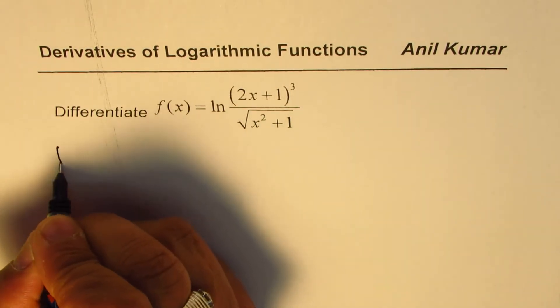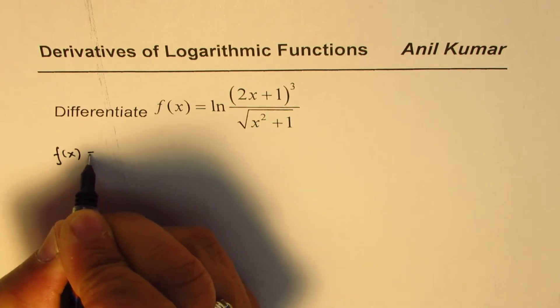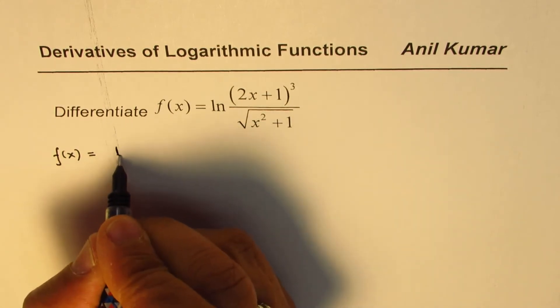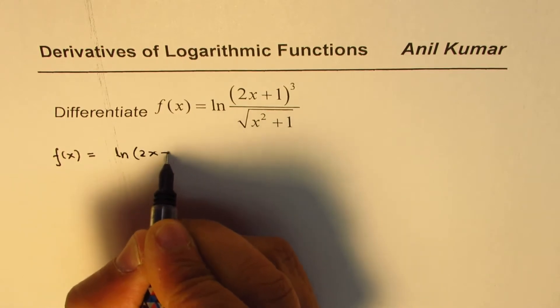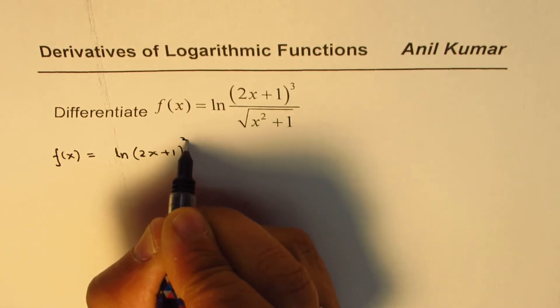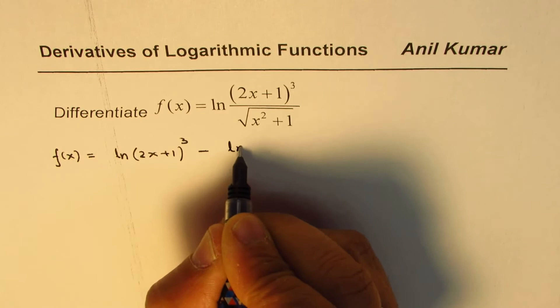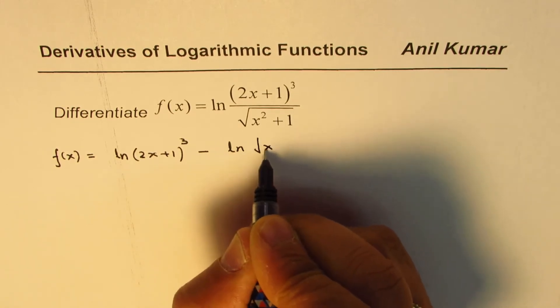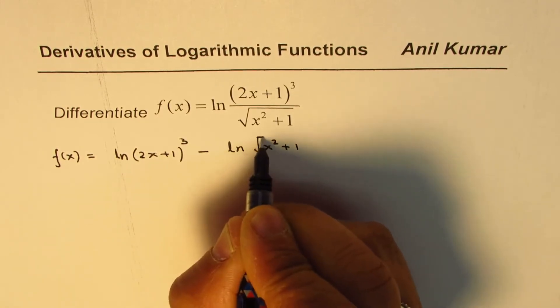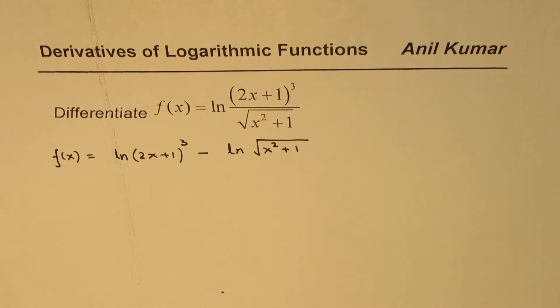We can rewrite this function as f(x) = ln(2x+1)³ - ln√(x²+1), using the properties of logarithms.